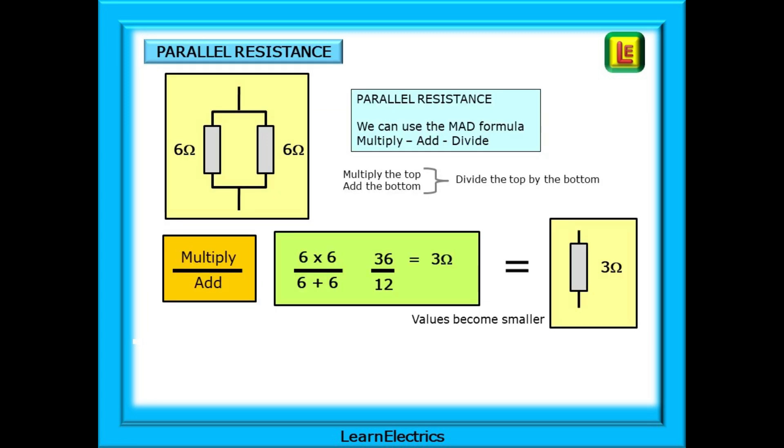Parallel resistors are completely different. We must calculate the effective resistance and there are two formulas to do this. The two 6 ohm resistors are side by side and share common nodes. The first formula is the MAD formula: multiply, add, divide. We take our two values and multiply them together on the top row, then we add them together on the bottom row. Finally we divide the top row by the bottom row and this is our answer.